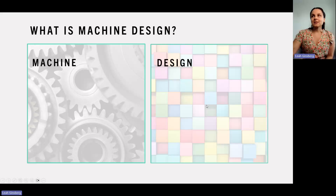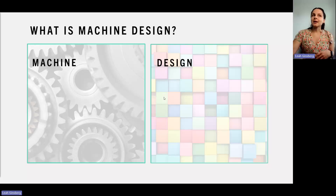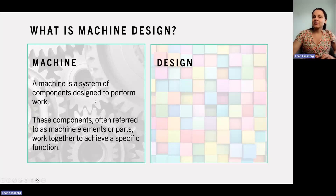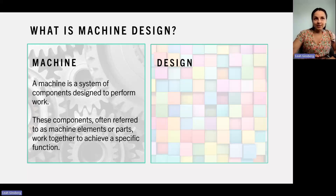First, let's define exactly what we mean by machine design in the engineering context. A machine is defined as a system of components designed to perform work. It can be as simple as a lever or as complex as a jet engine, but the key idea is that a machine consists of multiple components working together to achieve a specific function.